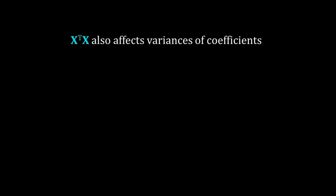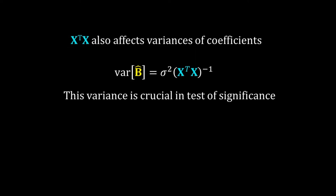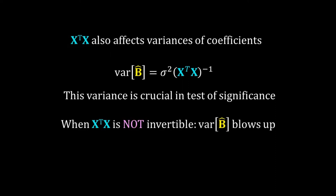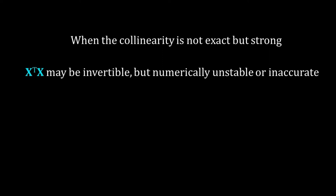X^T*X also affects the variances of coefficients. For multiple regression, the variance of b_hat is written as: Var(b_hat) = σ² * (X^T*X)^{-1}, where σ is the standard error of regression. This variance is crucial in significance testing. When X^T*X is not invertible, the variance of b_hat blows up. Even when collinearity is not exact but strong, X^T*X may be invertible but numerically unstable and inaccurate, causing the variance of b_hat to be very high.